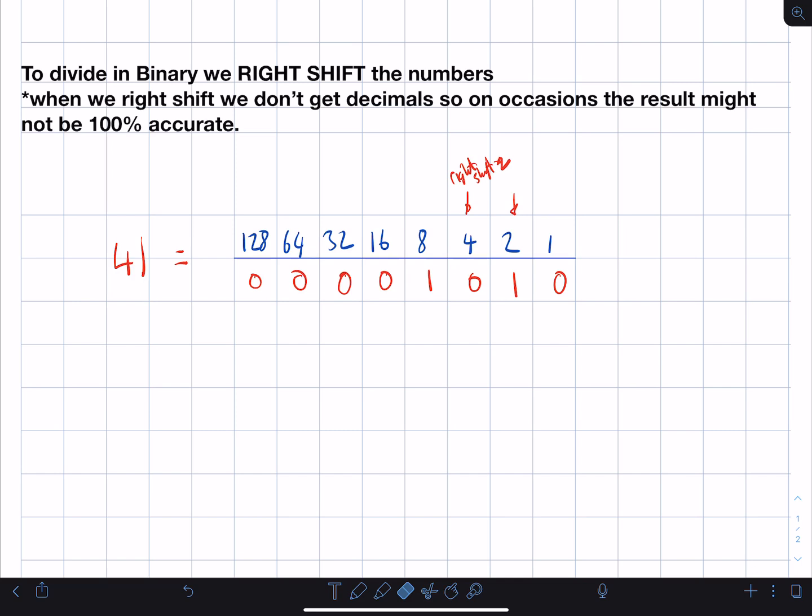So let's have a little look at the number we have now. So normally, if we were to divide 41 by 4, we'd get 10 and a quarter, 10.25. However, on this occasion we have 8 plus 2, which gives us 10. So you can see the result's close, but it doesn't give the decimal.